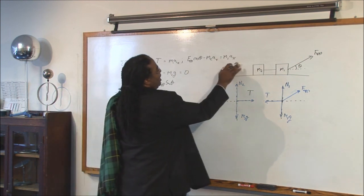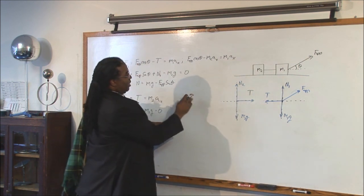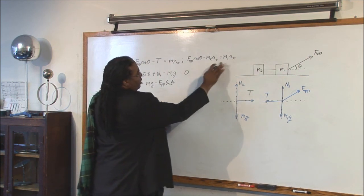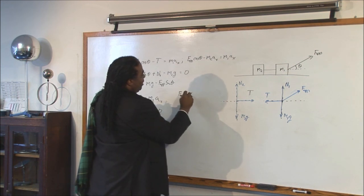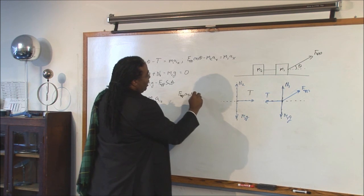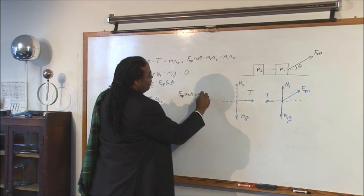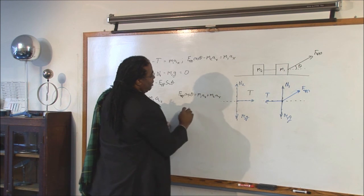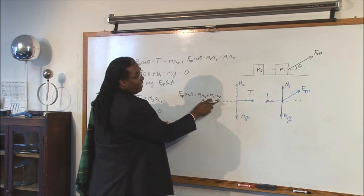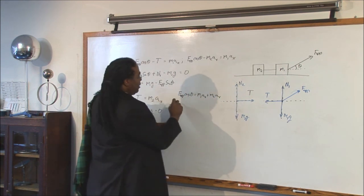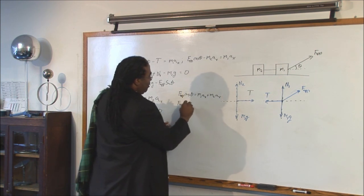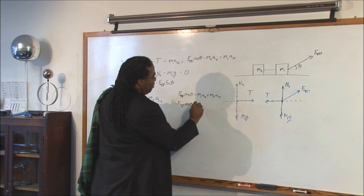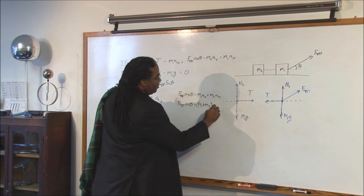So now we just have to get a by itself. I'm going to bring it down here if you don't mind. So I'll bring the terms with a over: F applied cosine theta equals M one a sub x plus M two a sub x and since both of these are a sub x we can factor them out. So this becomes F applied cosine theta equals M one plus M two a sub x.